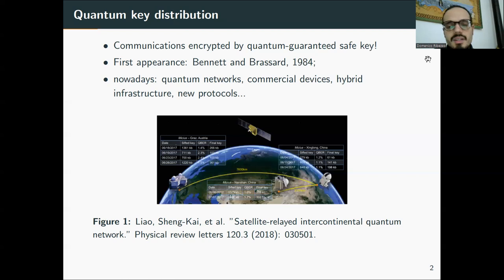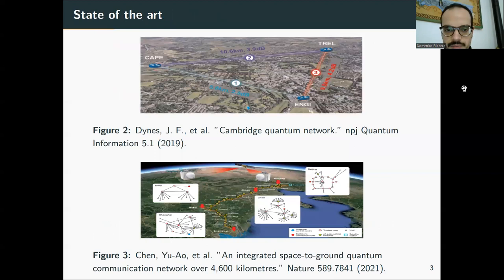For example, what you see in this picture is an experiment made in 2018, where a quantum network was established between China and Austria and the key was used to encrypt the video. It was made using satellites. Then, other important quantum networks are the quantum networks going all around the city of Cambridge and the most advanced one at the moment, the Chinese quantum network connecting many important Chinese cities from Shanghai to Beijing, running for 4,600 kilometers. It's pretty advanced.